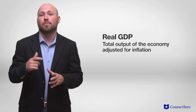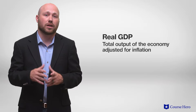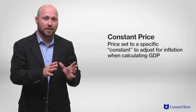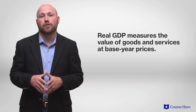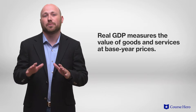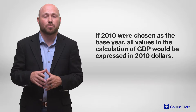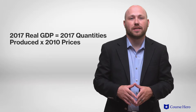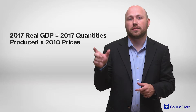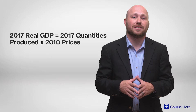Real GDP is the total output of the economy adjusted for inflation, calculated according to a constant price set to a specific base year. Real GDP measures the value of goods and services at base year prices. For example, if 2010 were chosen as the base year, all values would be expressed in 2010 dollars. So real GDP for 2017 is calculated by taking the quantities of all goods and services produced in 2017 and multiplying them by their 2010 prices.